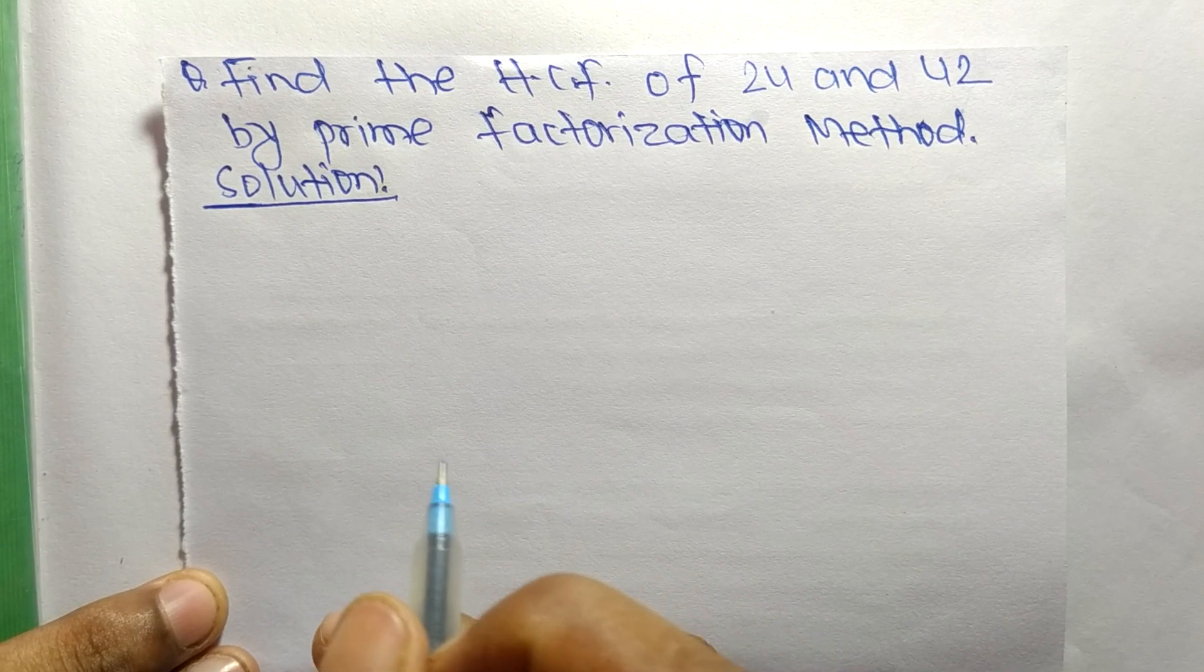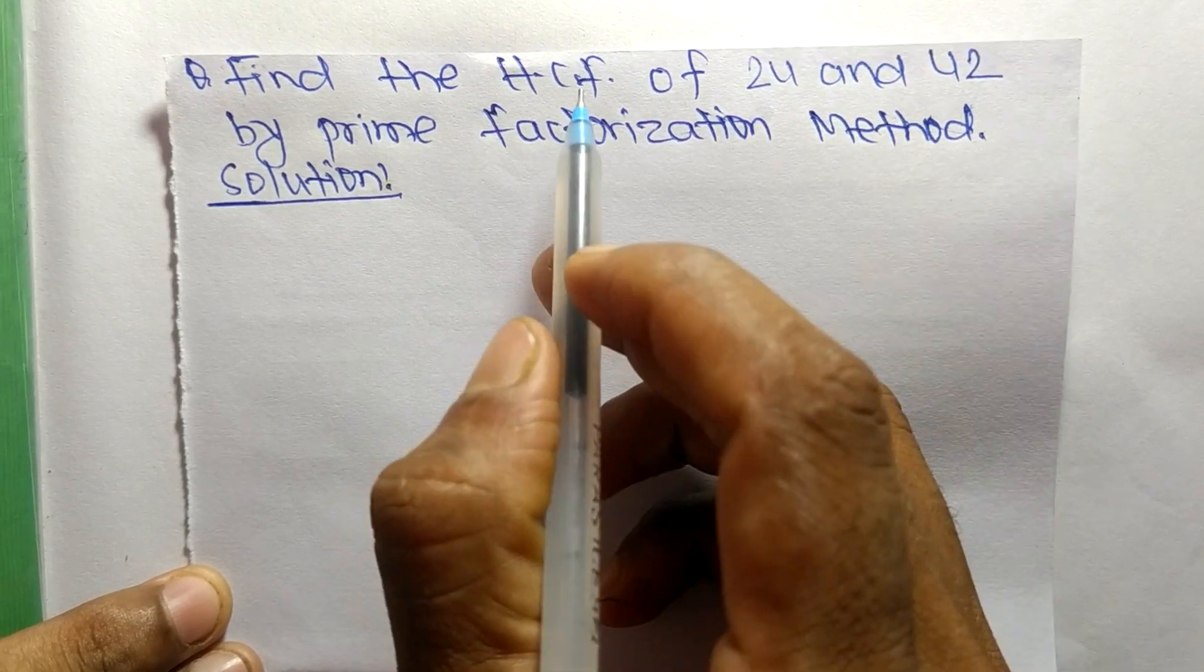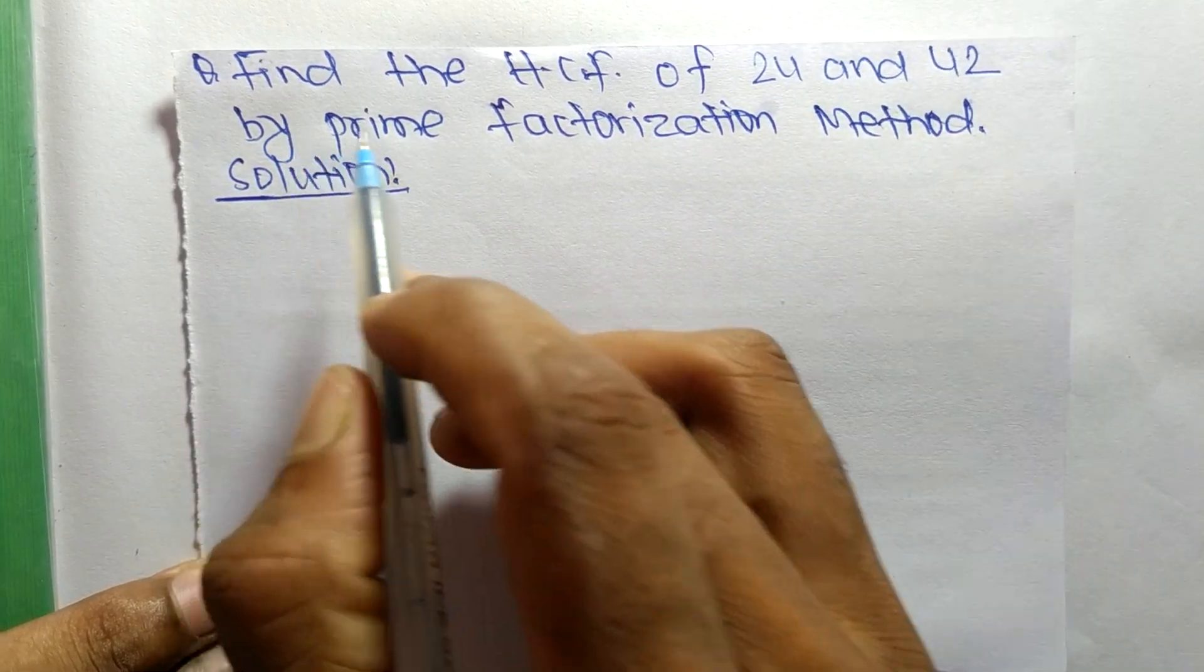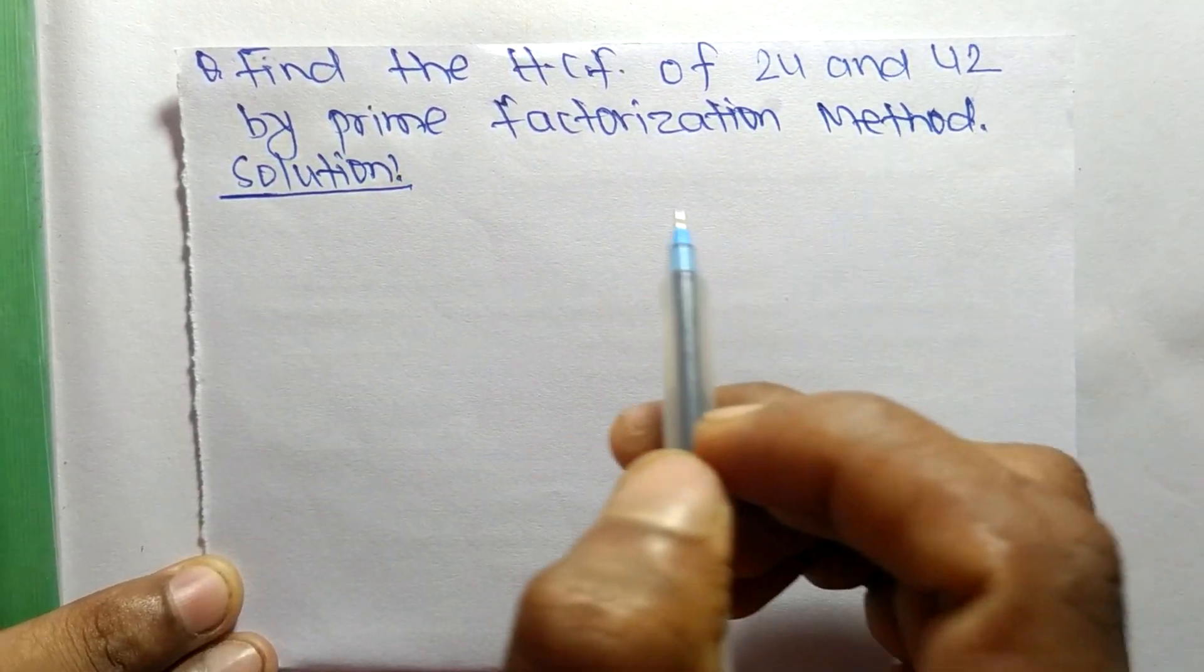So today in this video we shall learn to find the HCF of 24 and 42 by prime factorization method.